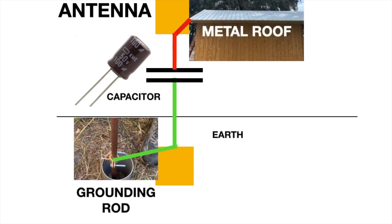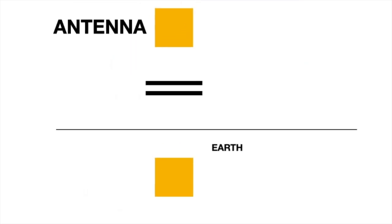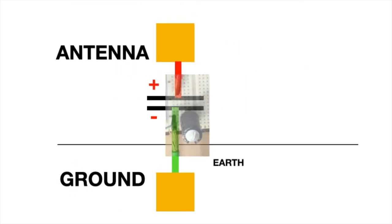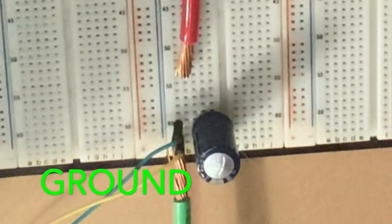And with your metal roof and your grounding rod, you will get enough charge accumulating in the capacitor until it exceeds the voltage rating. And here's a video showing this.